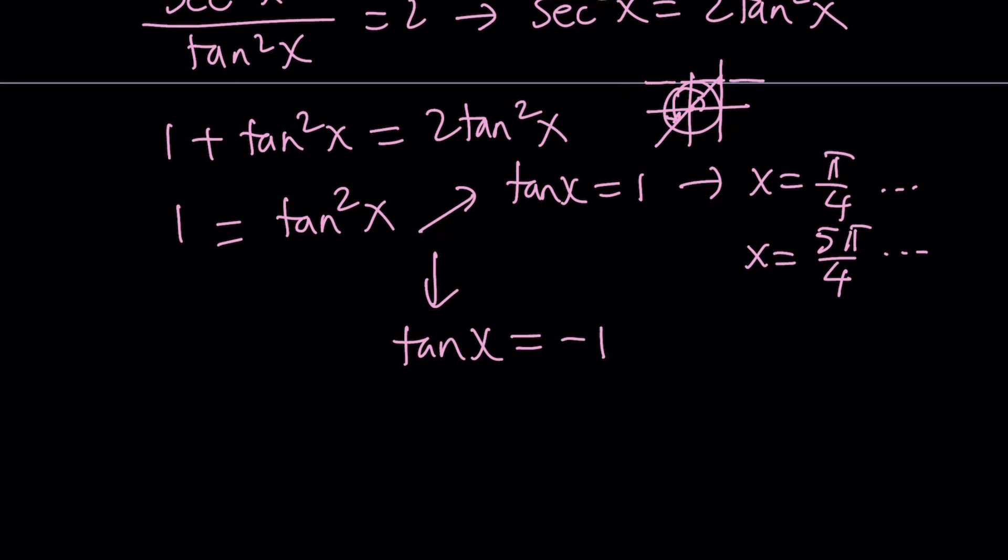Alright, but those are going to be the solutions between 0 and 2 pi. What about the tangent x equals negative 1? That's also going to give us two solutions. If you think about just reversing this, you're going to get that.